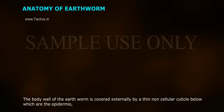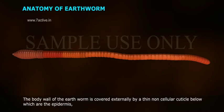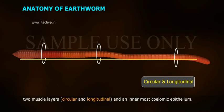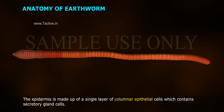Anatomy of Earthworm. The body wall of the earthworm is covered externally by a thin noncellular cuticle, below which are the epidermis and two muscle layers — circular and longitudinal — and an innermost layer. The epidermis is made up of a single layer of columnar epithelial cells which contain secretory gland cells.